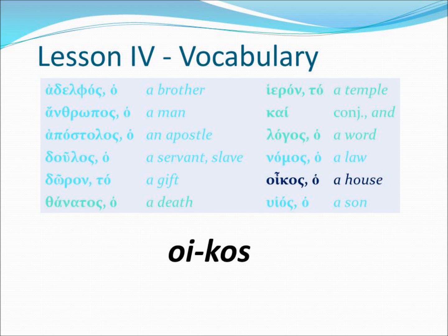Our next word is oikos. Notice the smooth breather mark above the diphthong omicron-iota, and there is a circumflex above it. We don't really deal with accents in these lessons, but that circumflex places emphasis on the diphthong, so it would be oikos. Without the article it would be 'a house,' and with the article ho oikos — which shows oikos is a masculine noun — it means 'the house.'